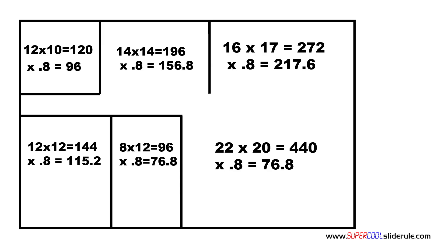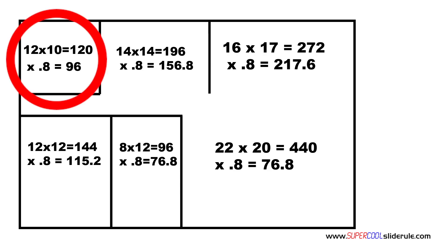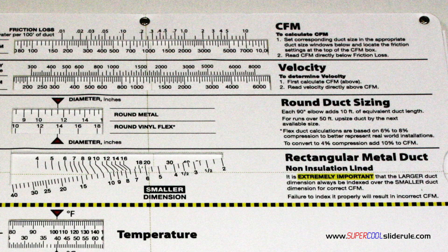In room one, the requirement was 96 CFMs. There are many ways to use the super cool tool, but the easiest is to index the required CFM directly under the .1 friction loss, which is also referred to as static pressure.